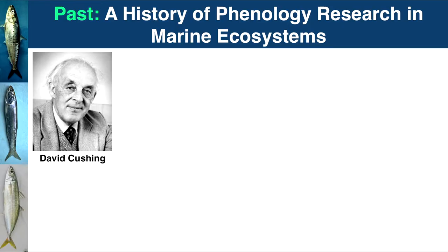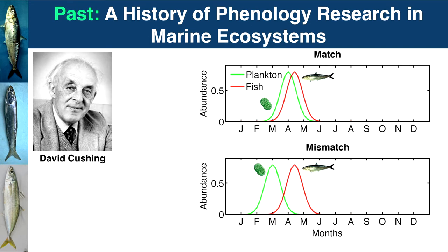To go through the past history of phenology, I'm going to highlight the work of David Cushing, who came up with the match-mismatch hypothesis. This diagram shows the background of that hypothesis. It posits that many fish have evolved to reproduce at the same time as plankton blooms, because that allows plenty of food for larval fish, giving them higher survival, faster growth, and resulting in higher fisheries production.